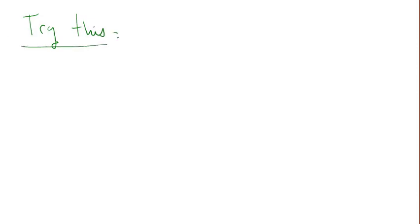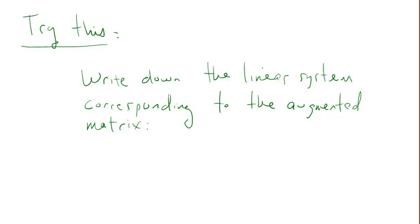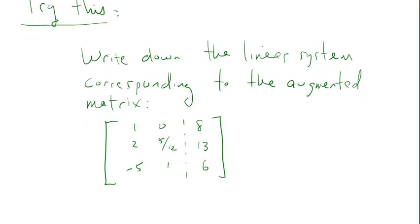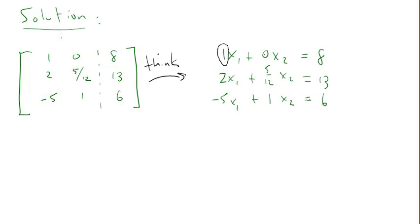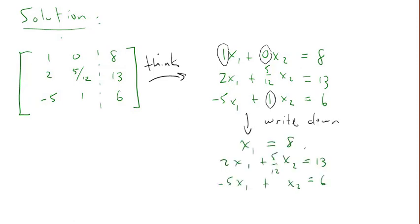Try this one: write down the linear system corresponding to the following augmented matrix. Put the video on pause and we'll check answers together. Here's the solution — copy down the coefficients and the data from the augmented matrix. Note that coefficients of one and zero don't need to be written explicitly, so in the final form we eliminate those for simplicity. The intermediate step doesn't need to be written down if you can do it mentally.